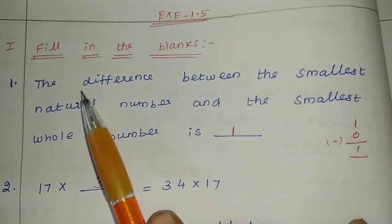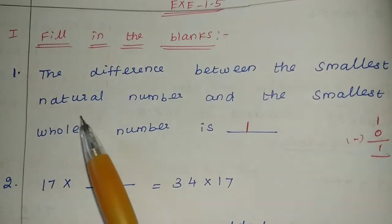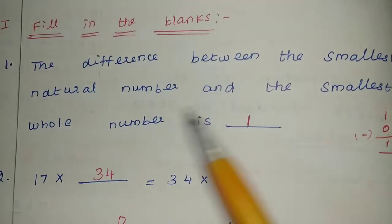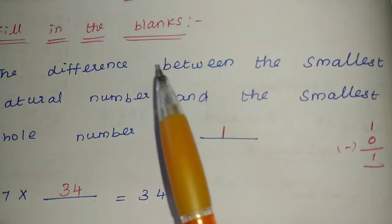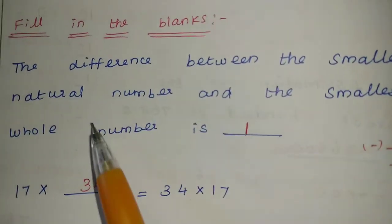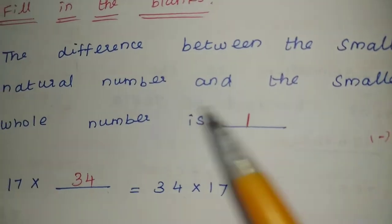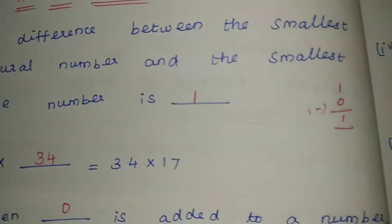Fill in the blanks. The difference between the smallest natural number and the smallest whole number is blank. Difference means subtraction. Smallest natural number, smallest whole number - what is the difference?